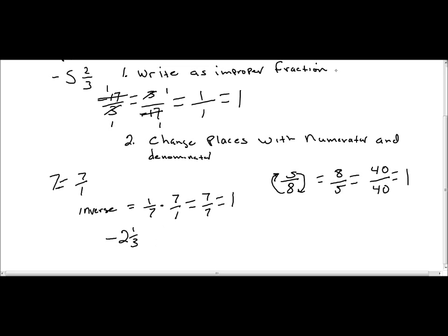So this is improper. First thing we're going to do is actually—this is mixed. We write as an improper fraction by multiplying 3 times a negative 2 plus 1. That's going to give us a negative 7 over 3. So now we're going to let the numerator and denominator rotate and switch places.